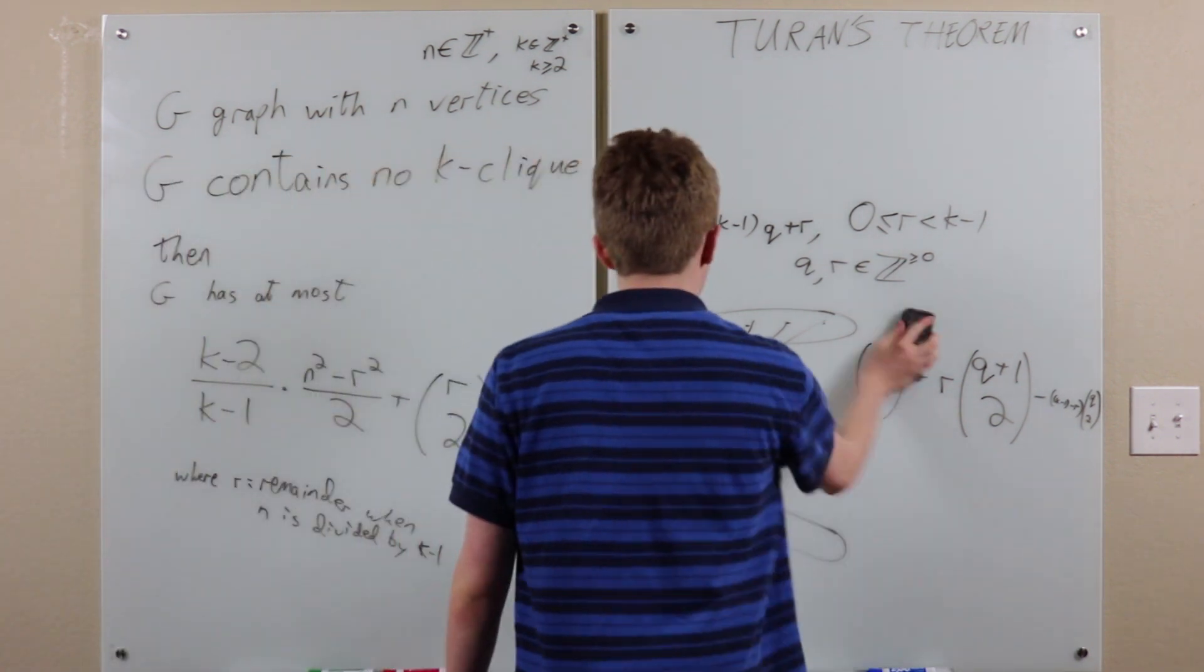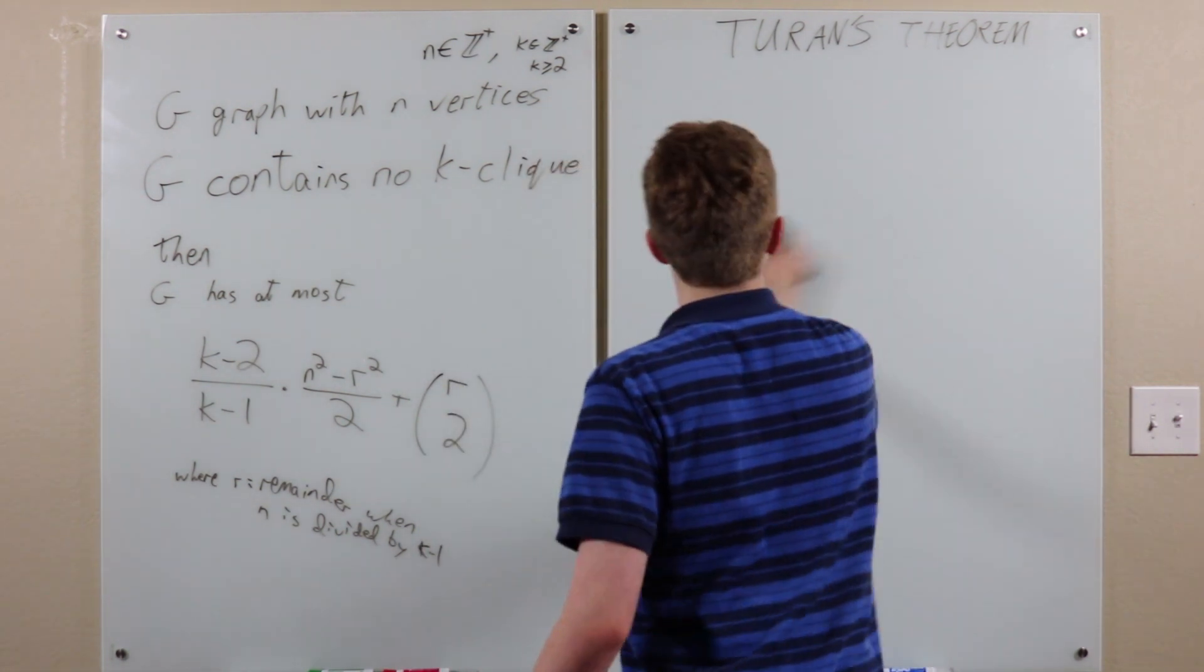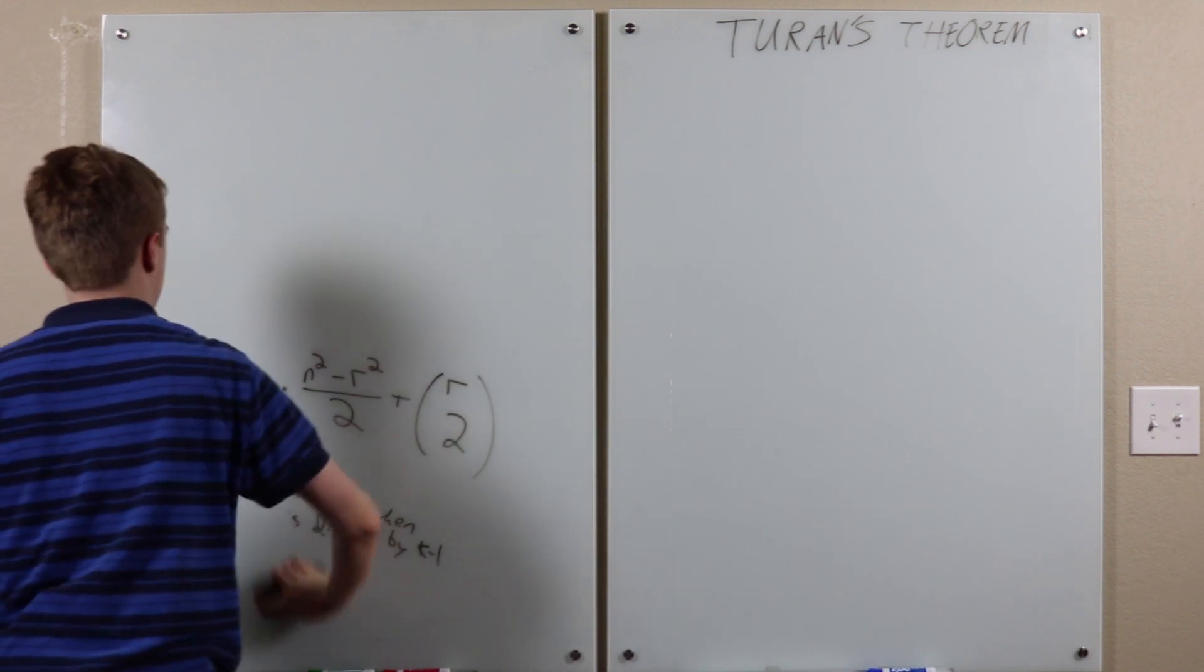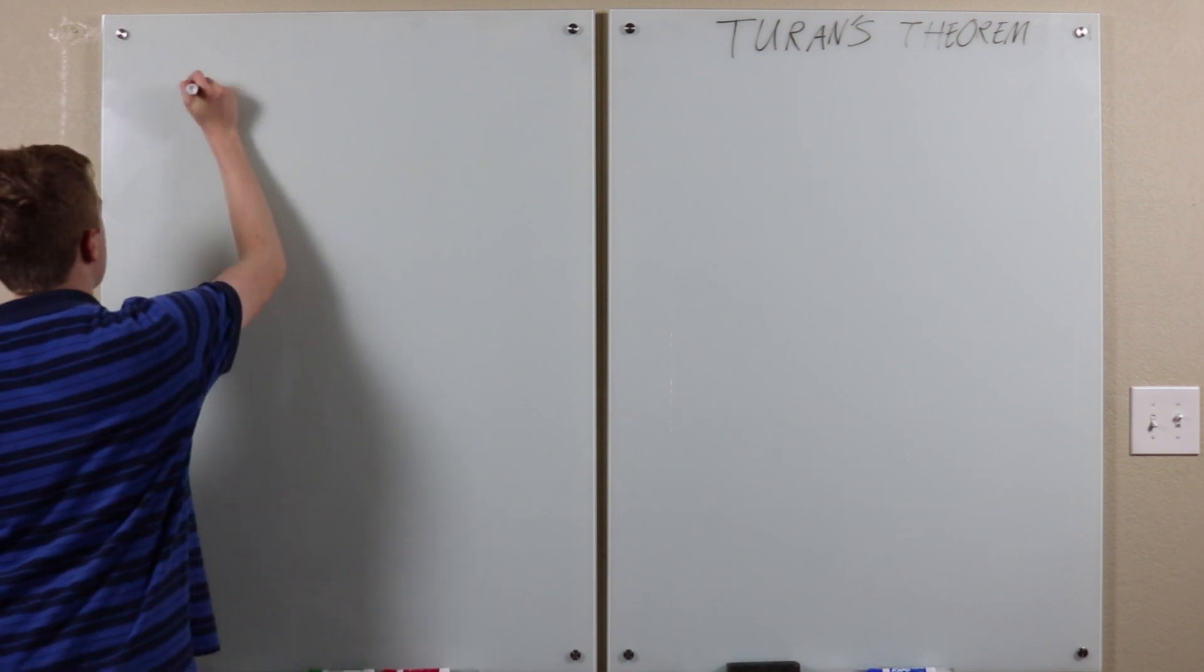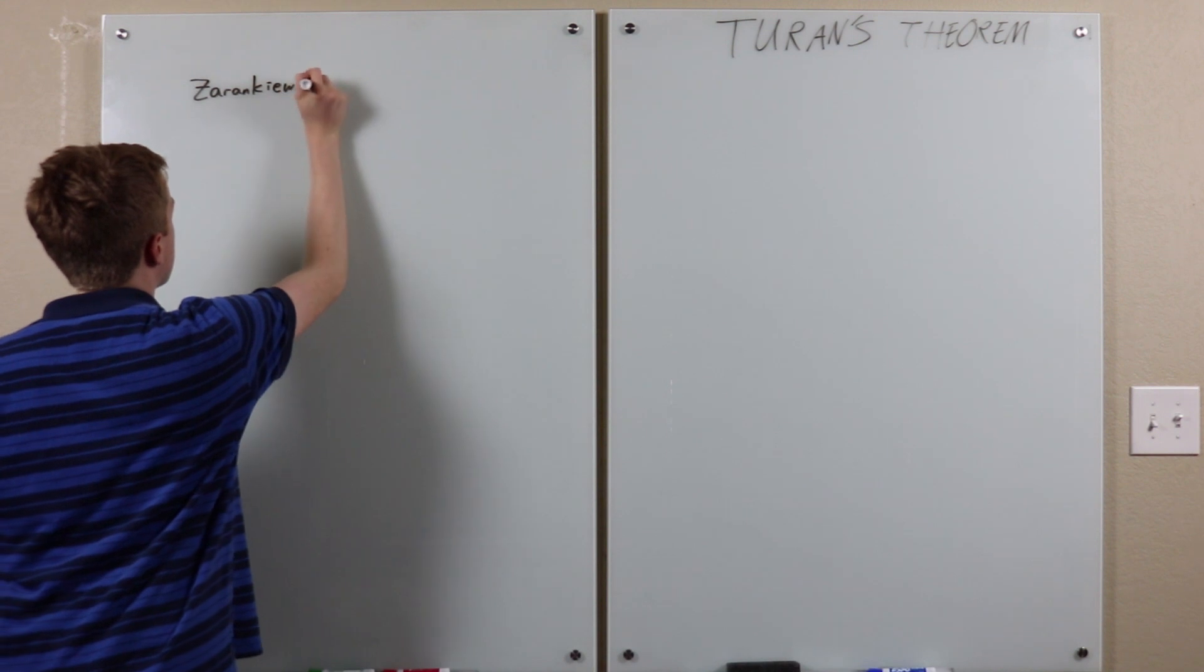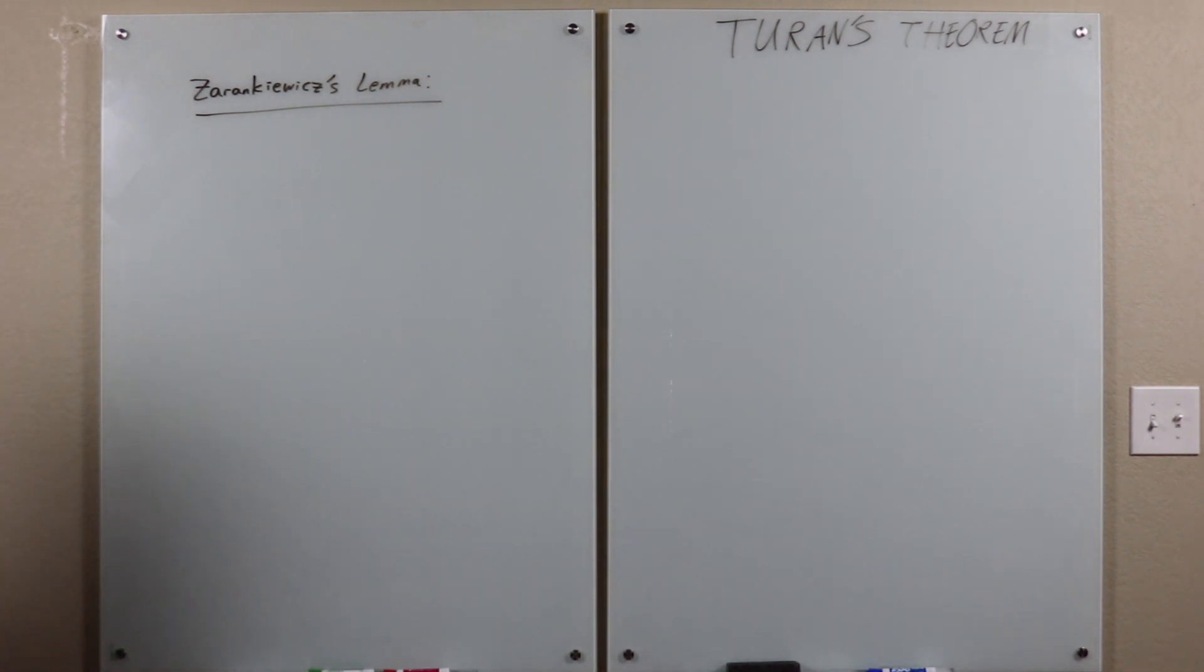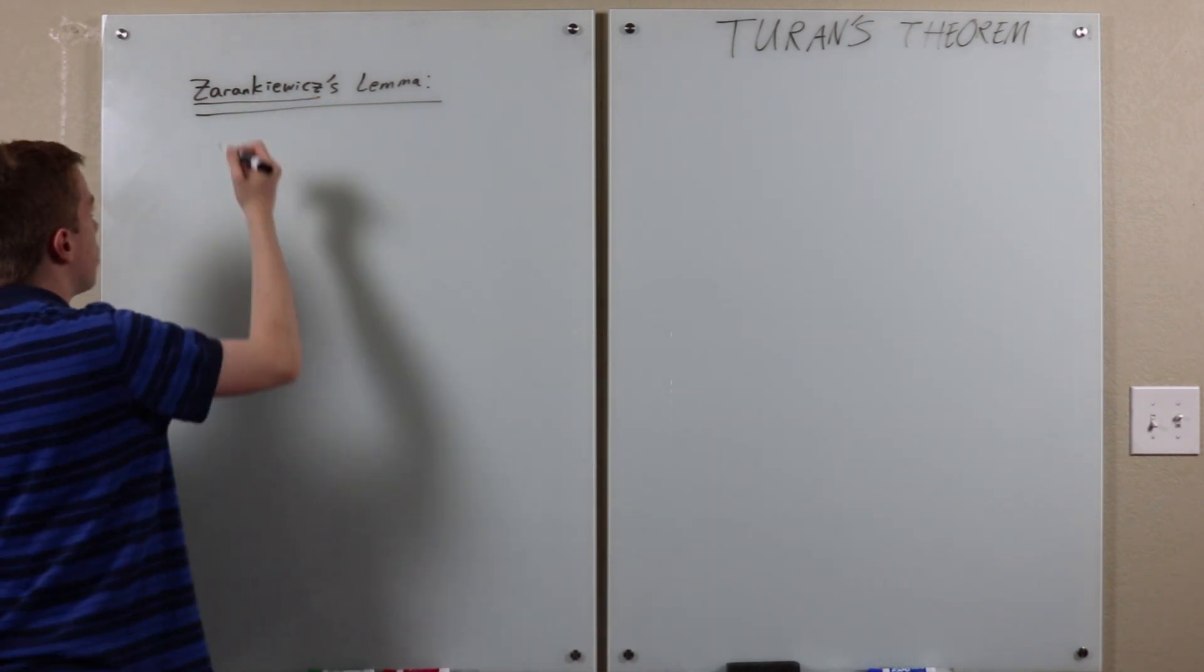Well, as in many great theorems, we need a lemma. Due to Zarankiewicz, or I'm not quite sure how that's pronounced. The apostrophe s is just for the possessive. This is the name.